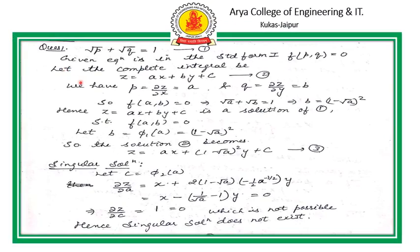Question number 1: the given equation is in the standard form first, that is, function of P and Q equals 0 — the equation contains only the terms of P and Q. For the solution of standard form first, we always take the complete integral Z equals AX plus BY plus C, given by equation number 2. From equation number 2, if we calculate ∂Z/∂X, we find A equals P.